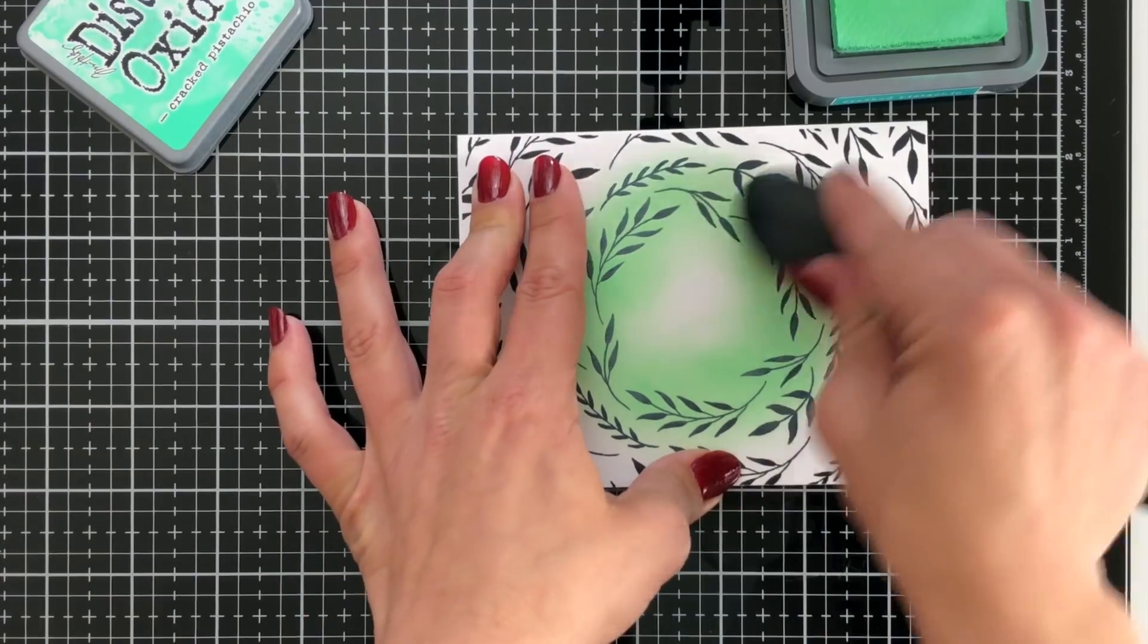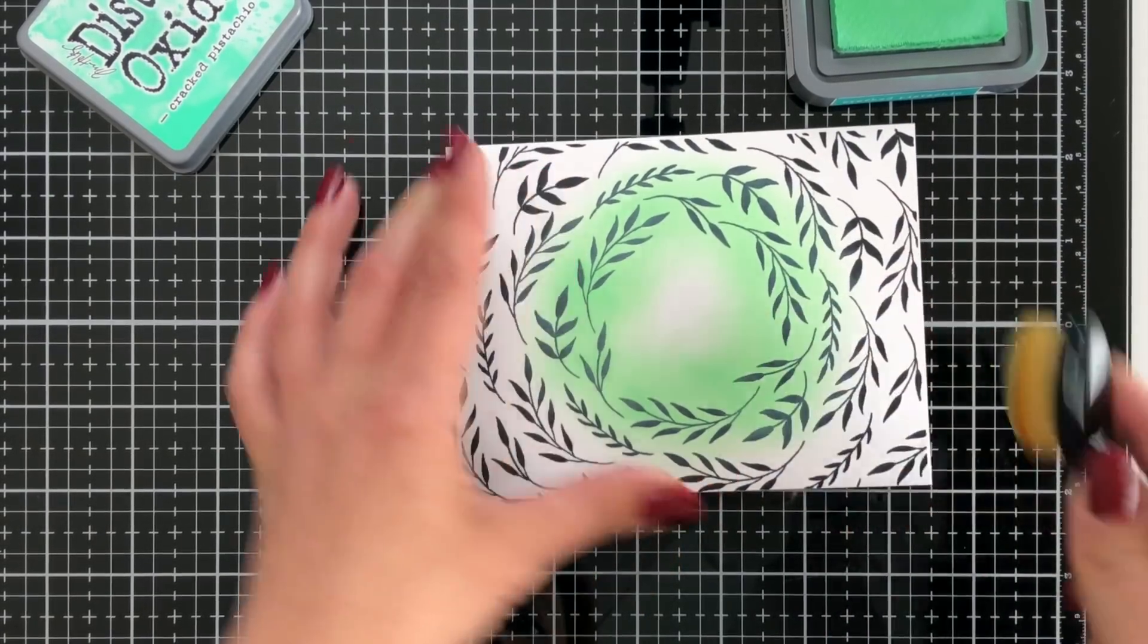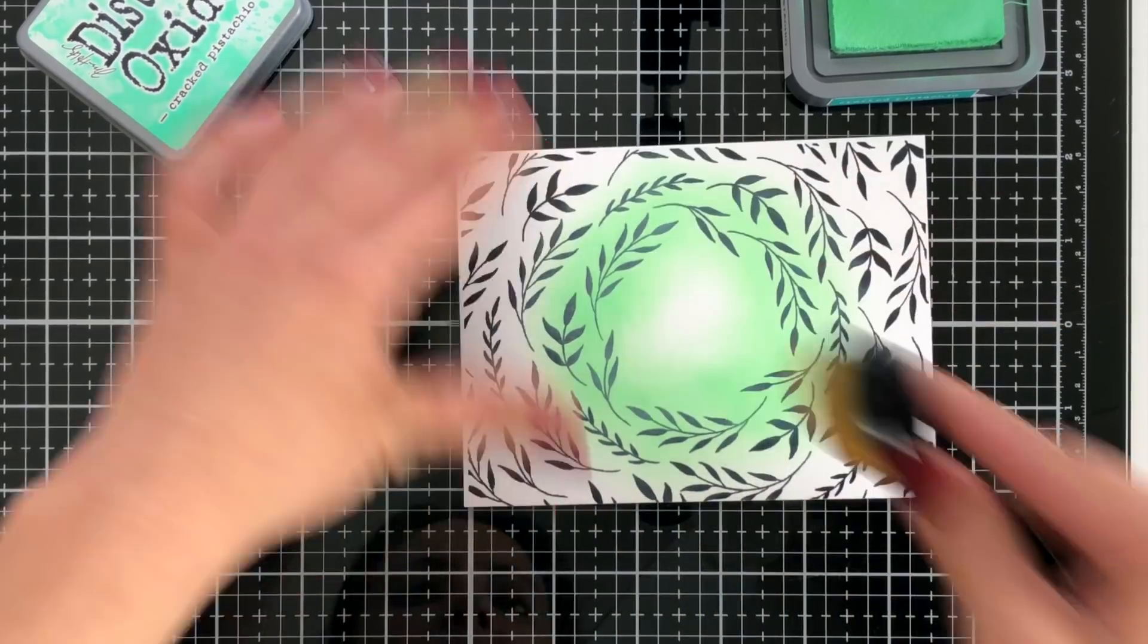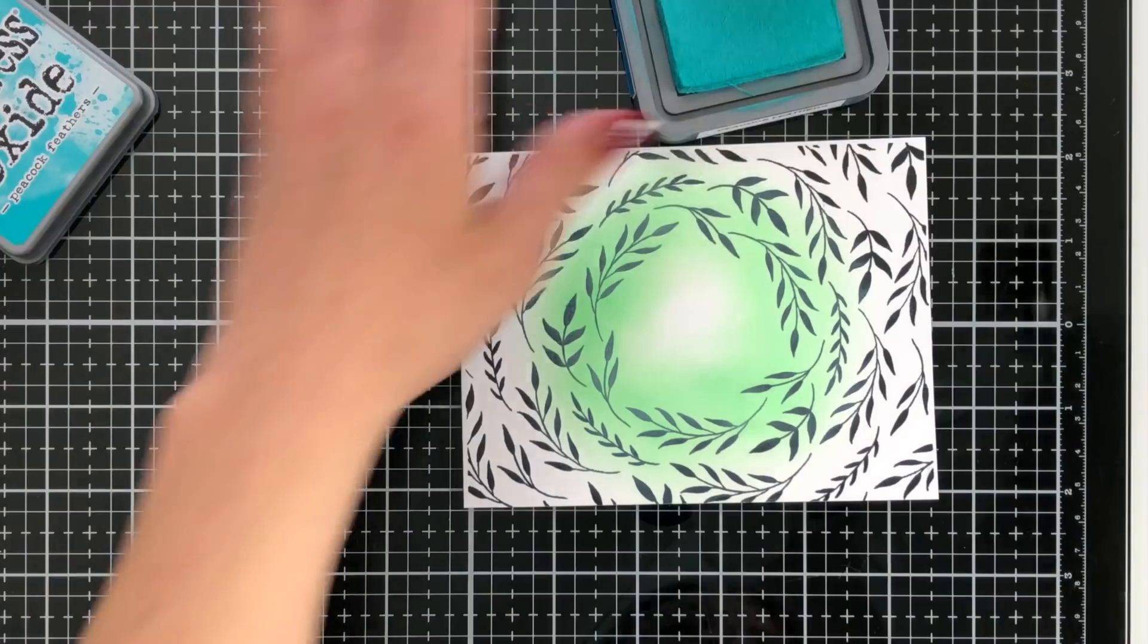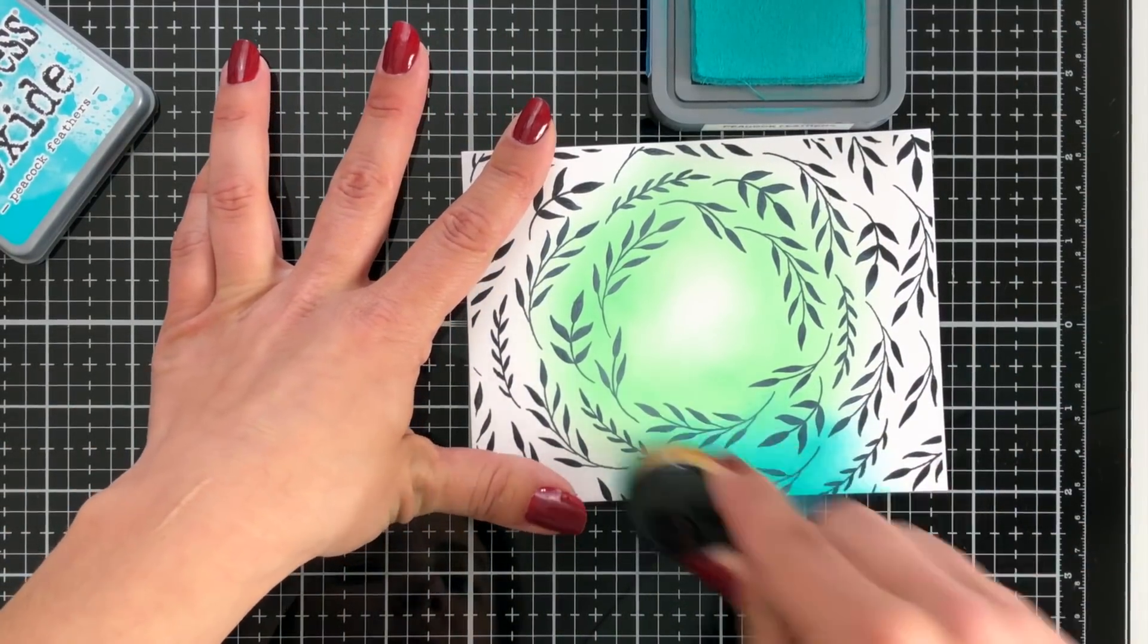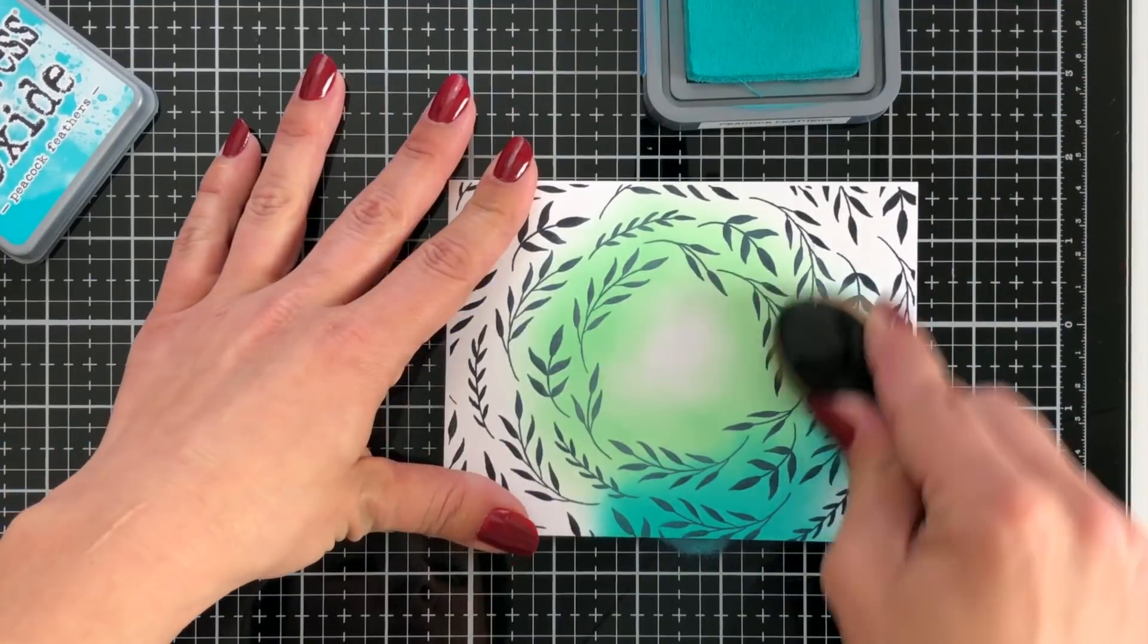So I'm using some of these life-changing blender brushes. This just helps me apply a nice smooth coat of the distress oxide ink in that area. And then I'm going to come in with the peacock feathers. And these two colors together are absolutely stunning.